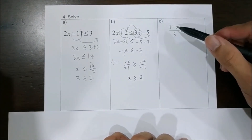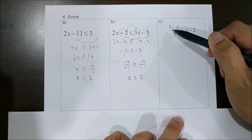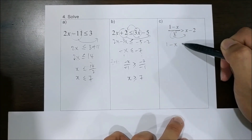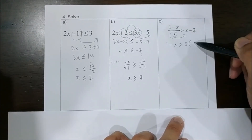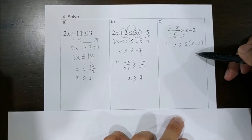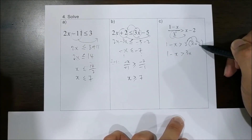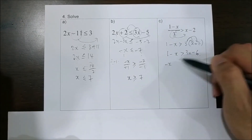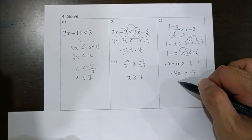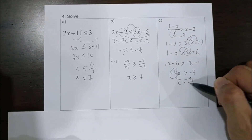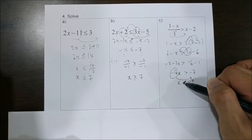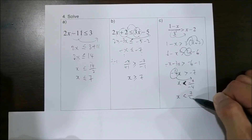Since there is a fraction, to make calculations easier, we move the 3 first. Since this means division, when we move the 3 it becomes multiplication: 1 minus x is greater than 3 multiplied by (x minus 2). When you multiply or divide with a positive number, nothing changes to the symbol. Then we move negative 4, which becomes division. When you divide by a negative number, the symbol has to change. So the final answer is x less than 7 over 4.